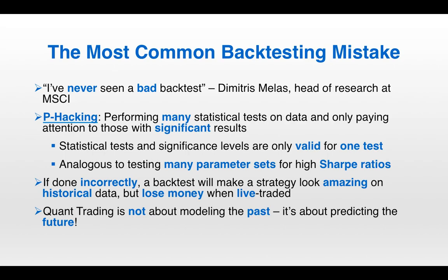An analogous problem is rampant in quant trading. If you test many different parameter sets for high Sharpe ratios, there are going to be some that do have high Sharpe ratios — it's a statistical certainty. But if you convince yourself that the handful of parameter sets with high Sharpe ratios is evidence the strategy works, you're just deceiving yourself. If a backtest is done incorrectly, it will make a strategy look amazing on historical data but lose money when live traded. It's important to remember that quant trading is not about modeling the past — it's all about predicting the future.